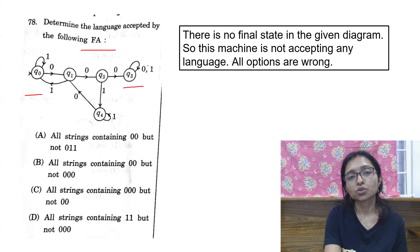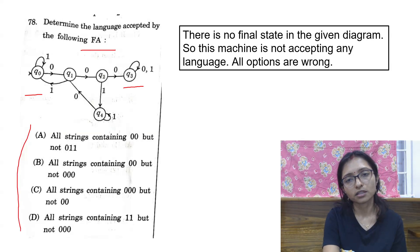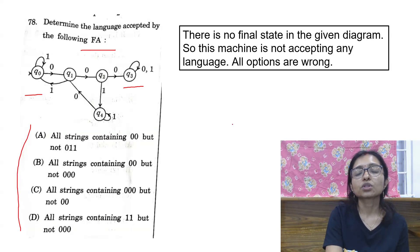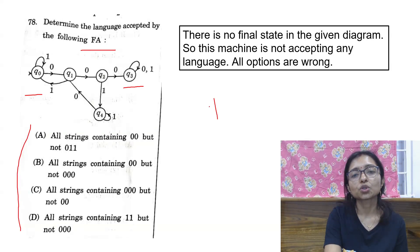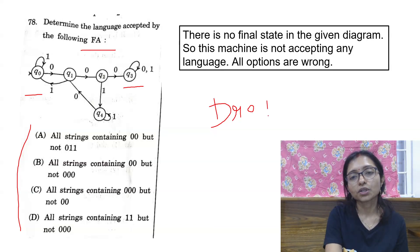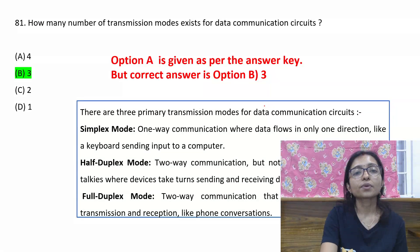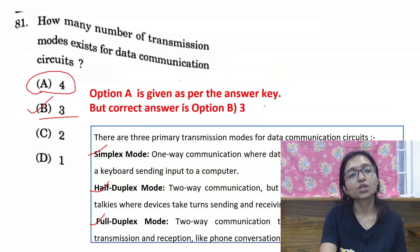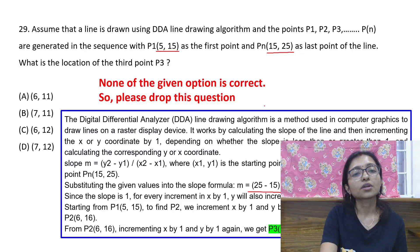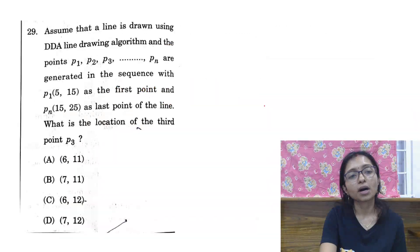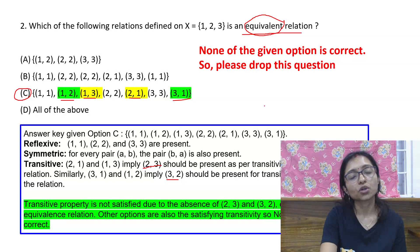This question also should be dropped. None of the options would be correct, so that's why this question also drop. You can challenge for drop. Everyone should get the marks for this. This question should be dropped. This question should be challenged. Those who marked option B, this question is actually wrong. This question also should be dropped. Marks for all. Question also should be dropped.